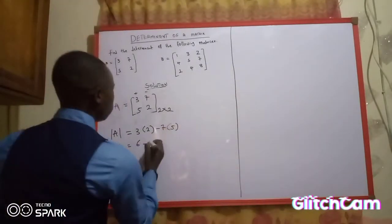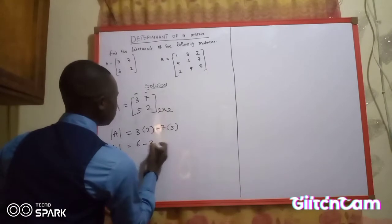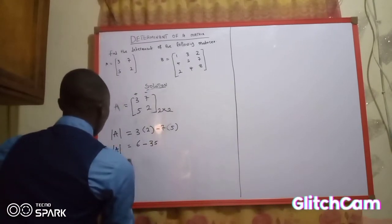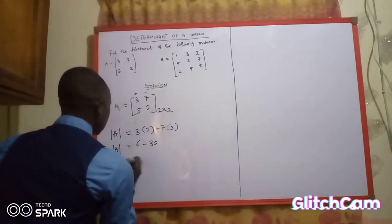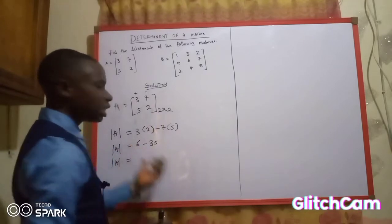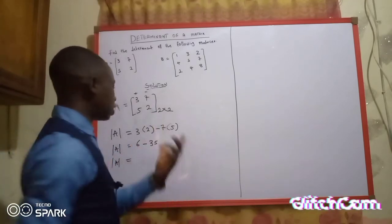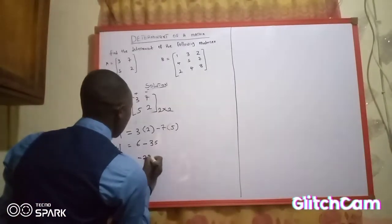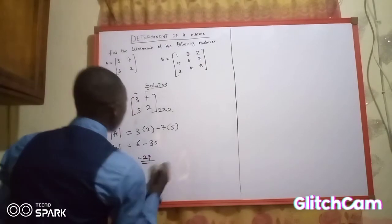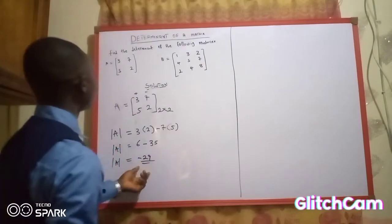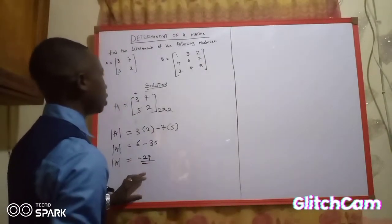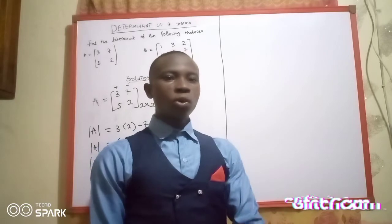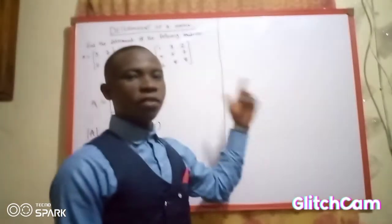So the determinant of A equals 3 times 2, which gives 6, minus 7 times 5, which gives 35. Therefore the determinant of Matrix A equals 6 minus 35, which is minus 29. This is the determinant of Matrix A.